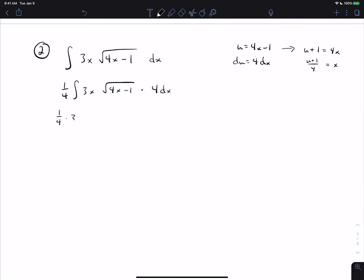So I can replace x with u plus 1 over 4. I'm going to go ahead and pull the 3 out. The x I'm going to replace with u plus 1 over 4. And the square root part, 4x minus 1 is equal to u. Now that doesn't look at all like a basic form, but there's some simple algebra you can do here. So we've got 3 fourths outside. I can pull the 4 on the bottom out as a 1 fourth. And then I've got u plus 1 times the square root of u, but square root of u is u to the 1 half.